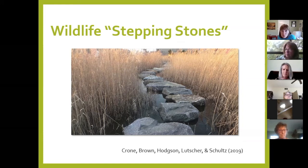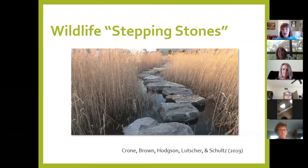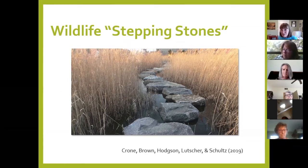A tiny bee on Texas frog fruit cannot get from my house in Northwest Houston all the way down to Memorial Park. But it can get from my house to my next-door neighbor's Gaillardia pulchella, and from there two houses down to the next neighbor's. We are in charge of creating stepping stones. Dr. Tallamy in his latest book, Nature's Best Hope, calls this 'homegrown national park' — we are a national park within an urban area.